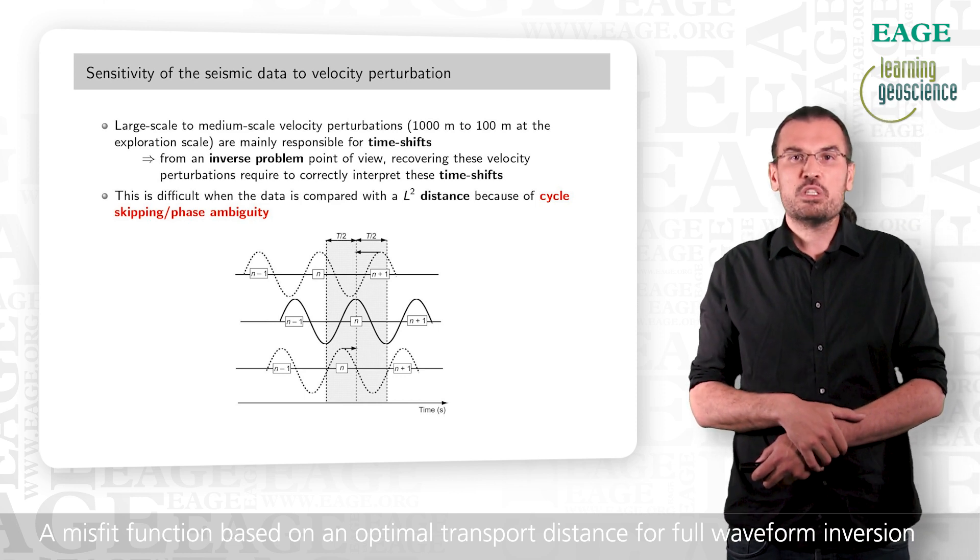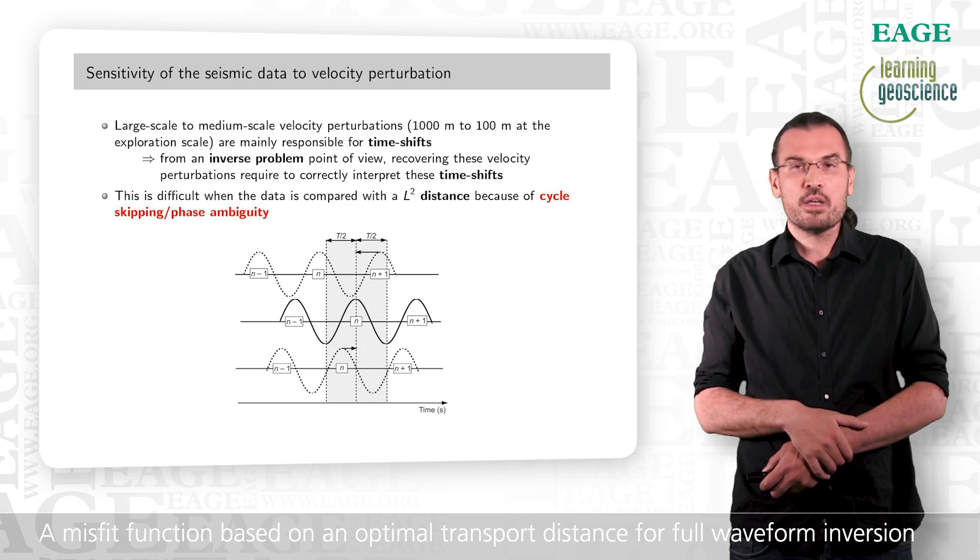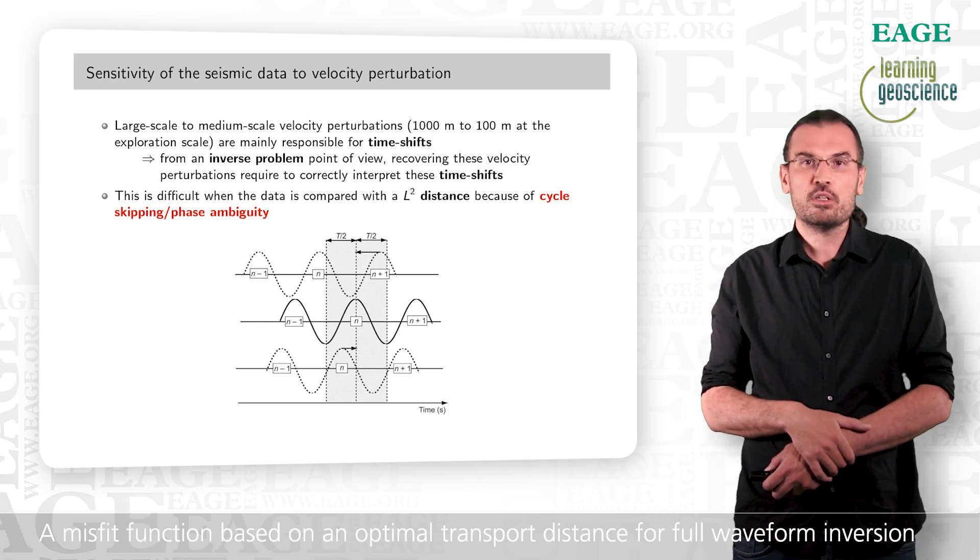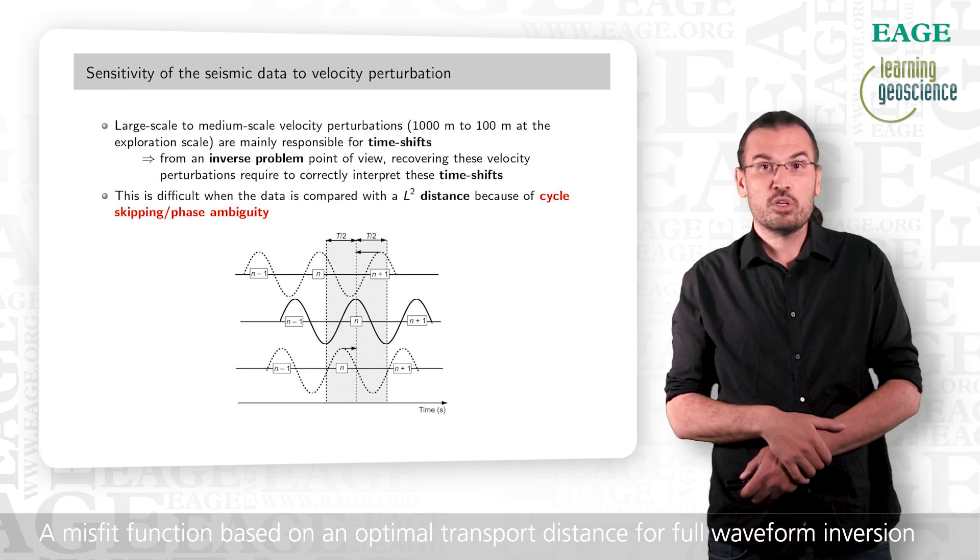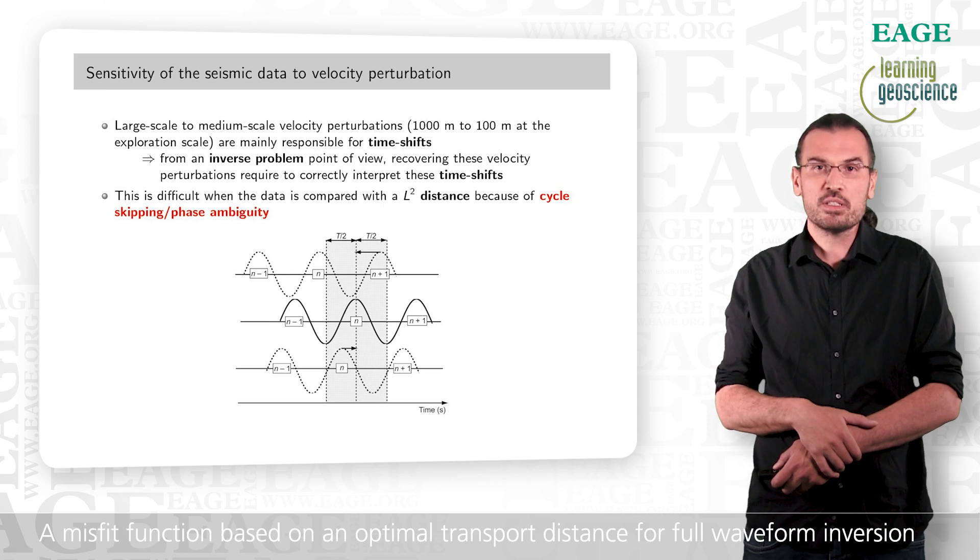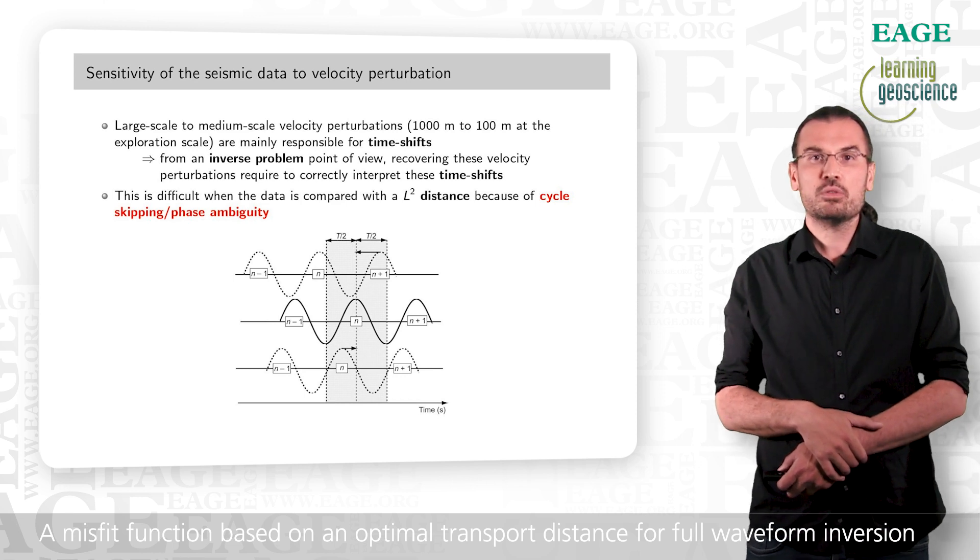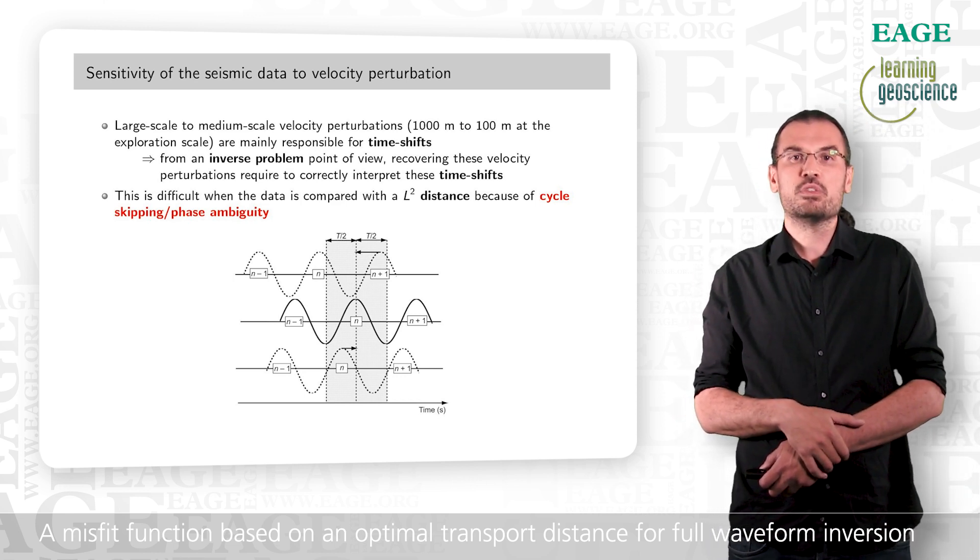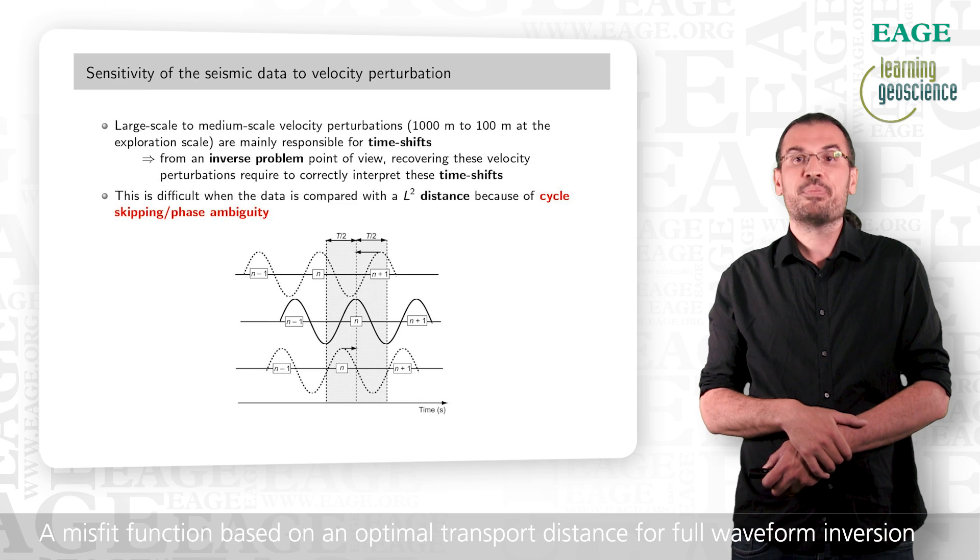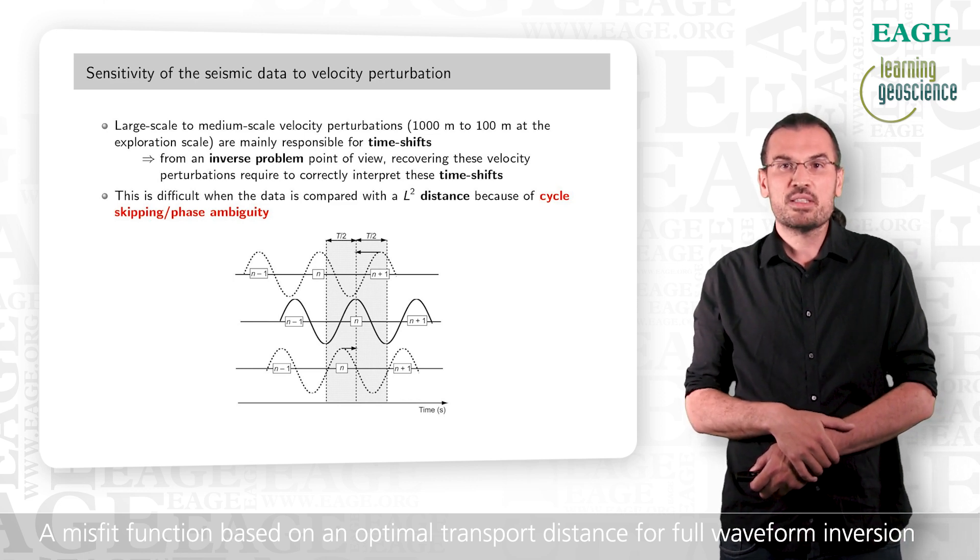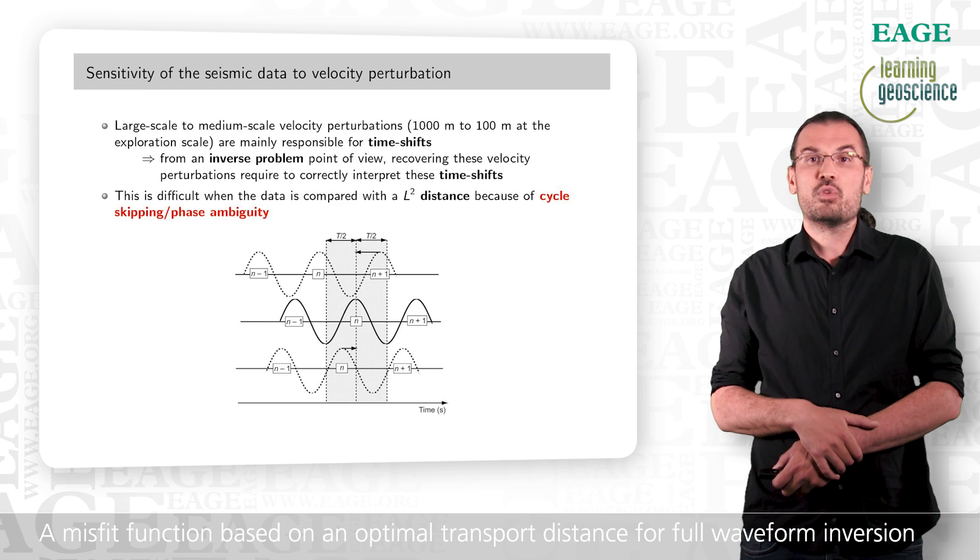FWI is based on the minimization of the misfit between observed and calculated data over a set of subsurface parameters. What we try to do is to find the subsurface parameters which give the best fit between observed and calculated data. This fit is often done in a least square sense and the subsurface parameter we are mostly interested in is the wave velocity. So interesting to note is that meso to macro scale variation of this parameter are mostly responsible for shifting in time the seismic data. So if we result in an inverse problem way of thinking, this means that recovering these velocity perturbations needs to properly interpret this time shift.